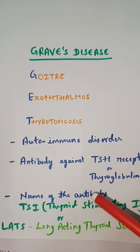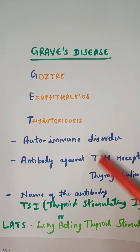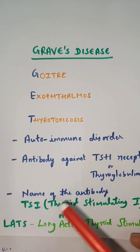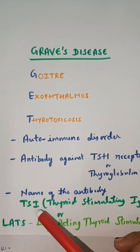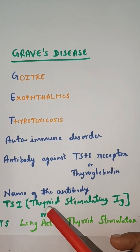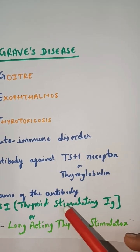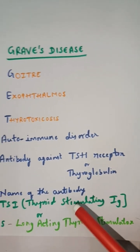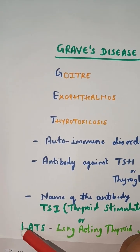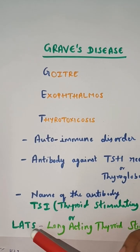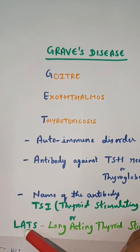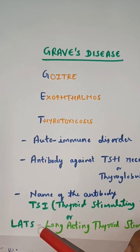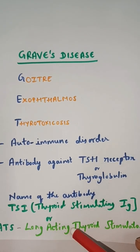The name of this antibody seen in Graves' disease is called TSI, which stands for thyroid stimulating immunoglobulin. Previously, it was known as LATS, which is nothing but long-acting thyroid stimulator.